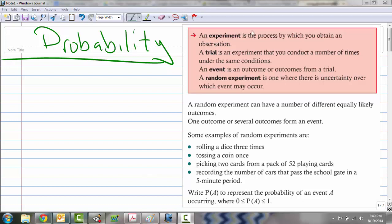So some terms: an experiment is the process by which you obtain an observation. A trial is within an experiment, and that's what we do over and over under the same conditions. An event, when we talk about an event happening, that's an outcome or multiple outcomes that are desirable in what we're looking at from the trial. And a random experiment is one where there's uncertainty over which event may occur. We can have lots of different outcomes that may be equally likely. Several outcomes, or maybe one outcome, will form an event.